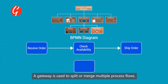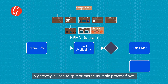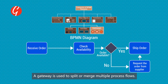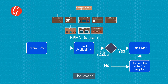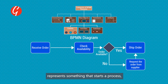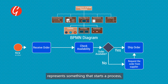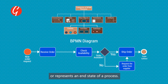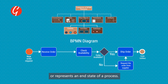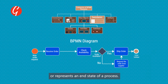A gateway is used to split or merge multiple process flows. It determines the branching, forking, merging and joining of a business process's path. The event represents something that starts a process, happens during the process, or represents an end state of a process.